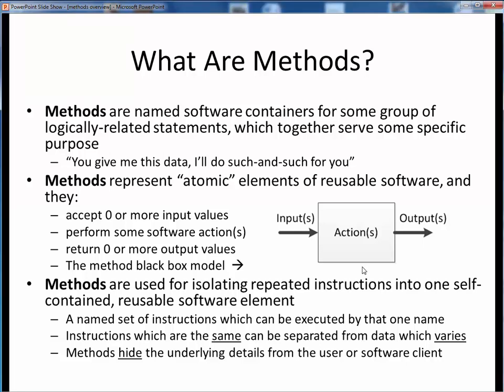Here on the right, we see the generic black box model for any method. A method accepts zero or more input values, performs some actions or calculations upon those inputs, and returns zero or more output values to the user of that method. We use methods in programming to collect up some set of repeated instructions, which can then be executed in the aggregate using one single name.